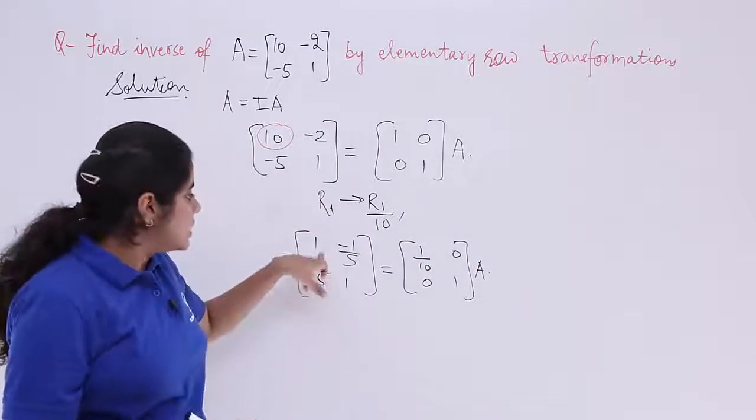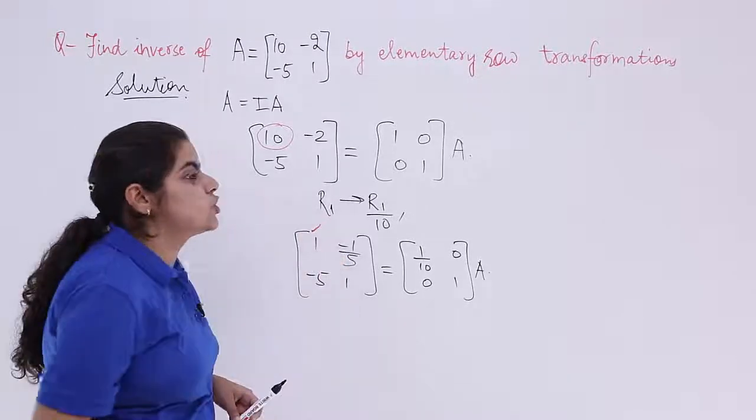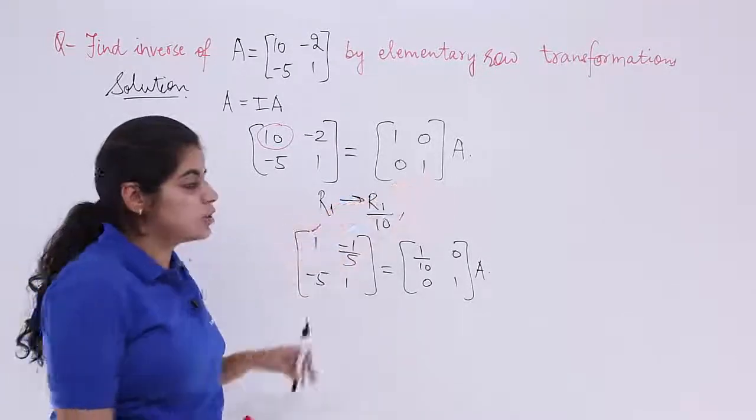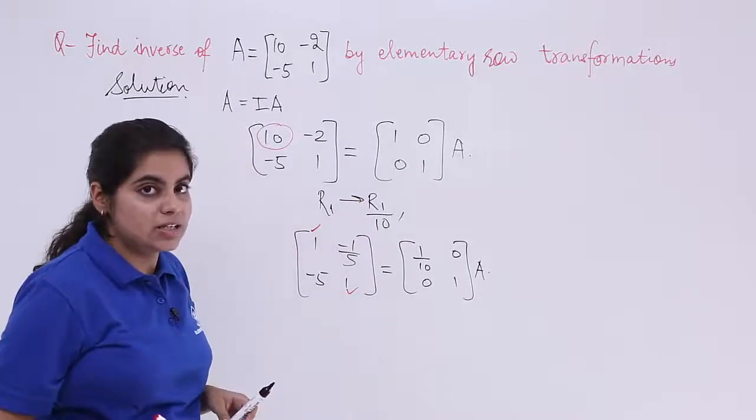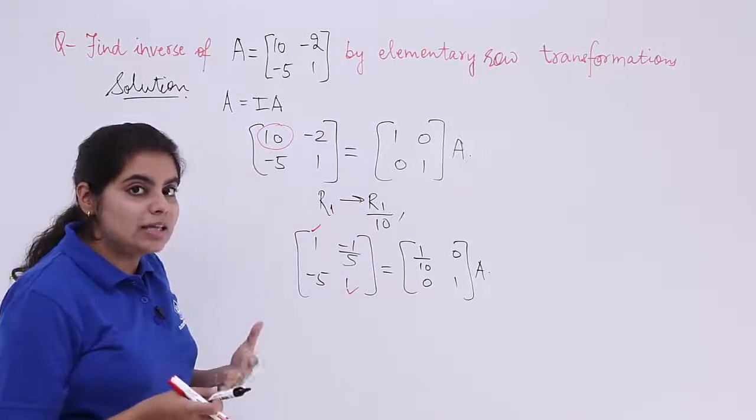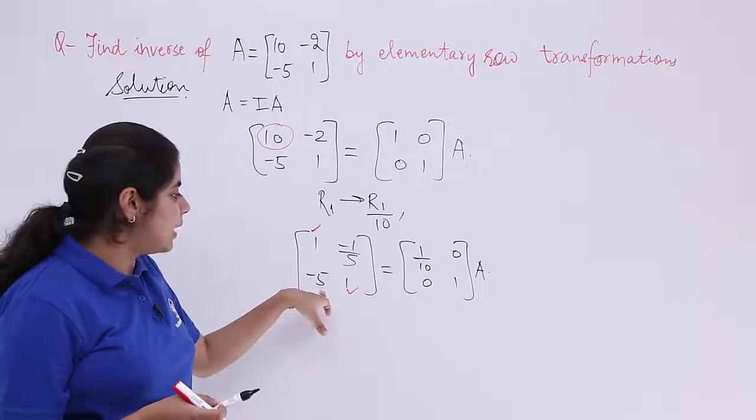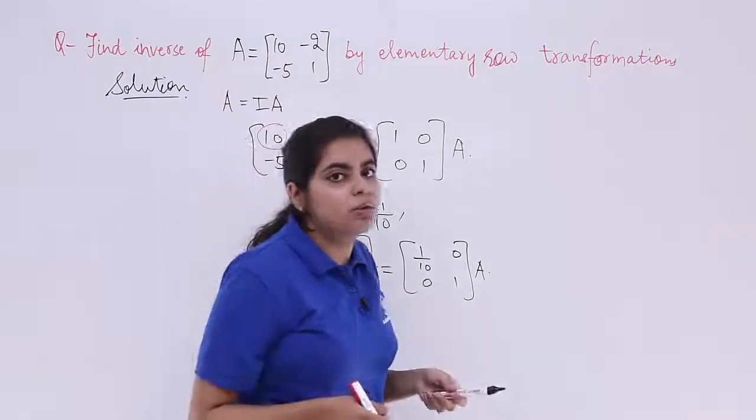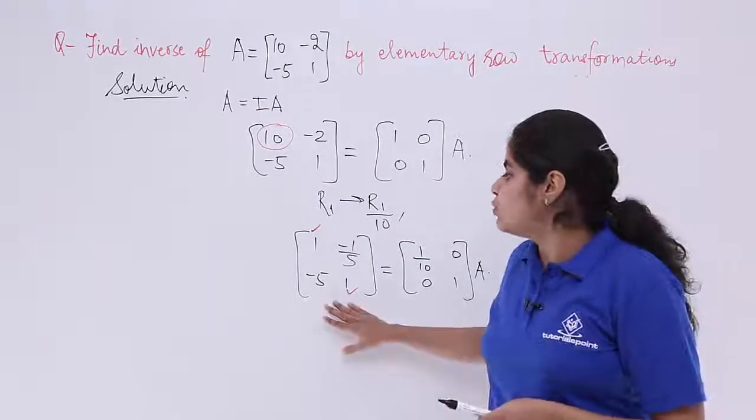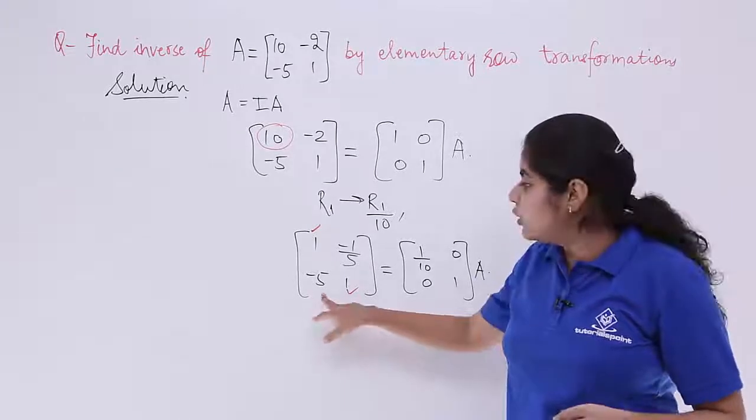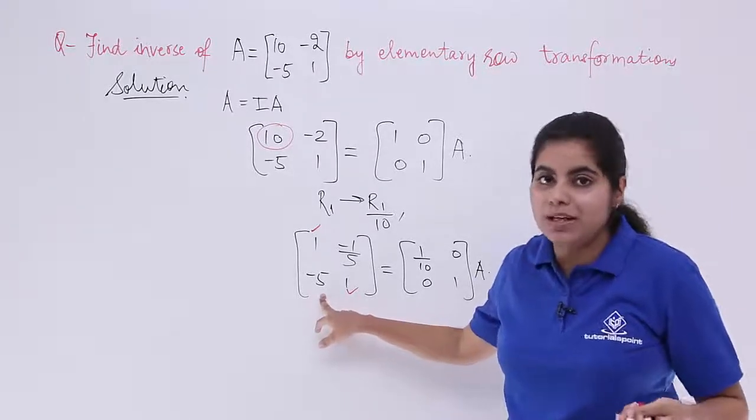Next, since it is 1 which I needed, yes this is set. Last element also 1 should be there, yes it is set. What is the other thing that is causing problem? It is minus 5 and minus 1 by 5 both actually. So what do I need to do? I need to apply something else in the R2 so as to eliminate minus 5.